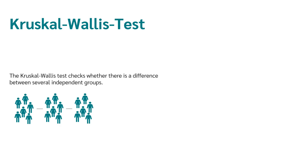The Kruskal-Wallis test is a hypothesis test that is used when you want to test whether there is a difference between several independent groups. Now you may wonder and say, if there are several independent groups, I use an analysis of variance. That's right, but if your data are not normally distributed and the assumptions for the analysis of variance are not met, the Kruskal-Wallis test is used.